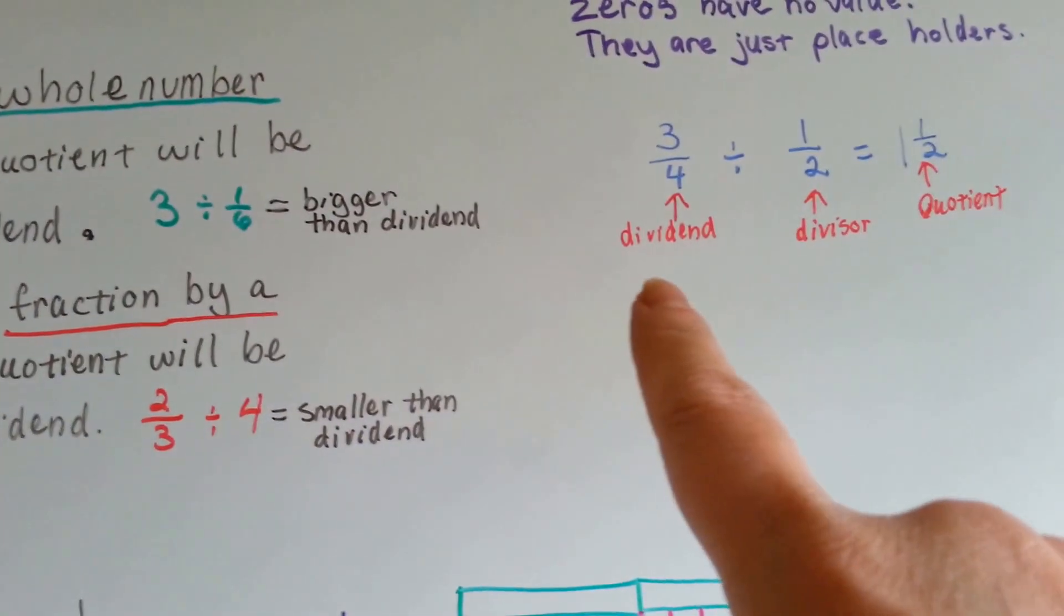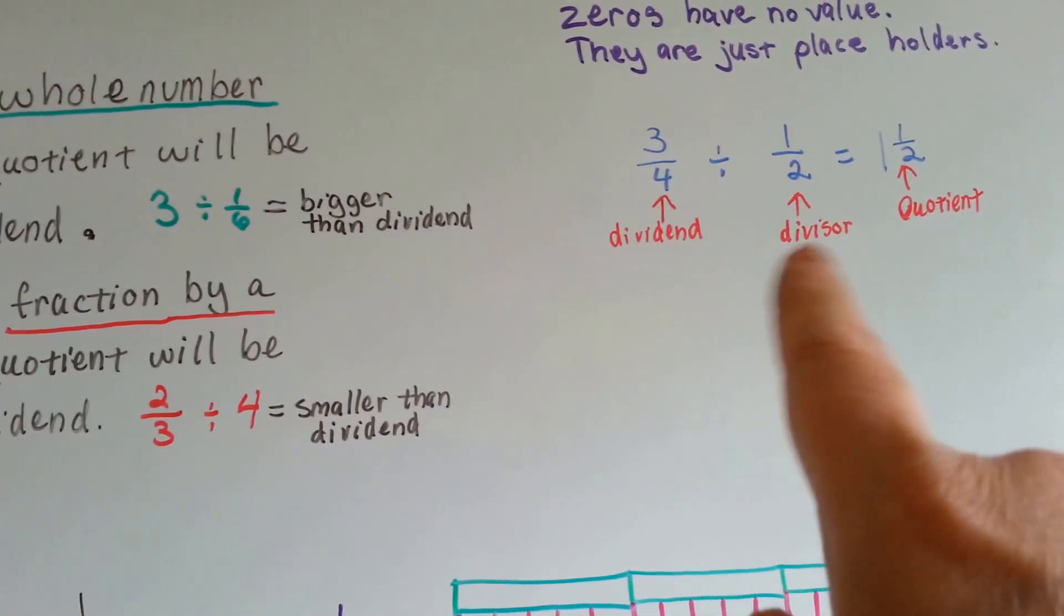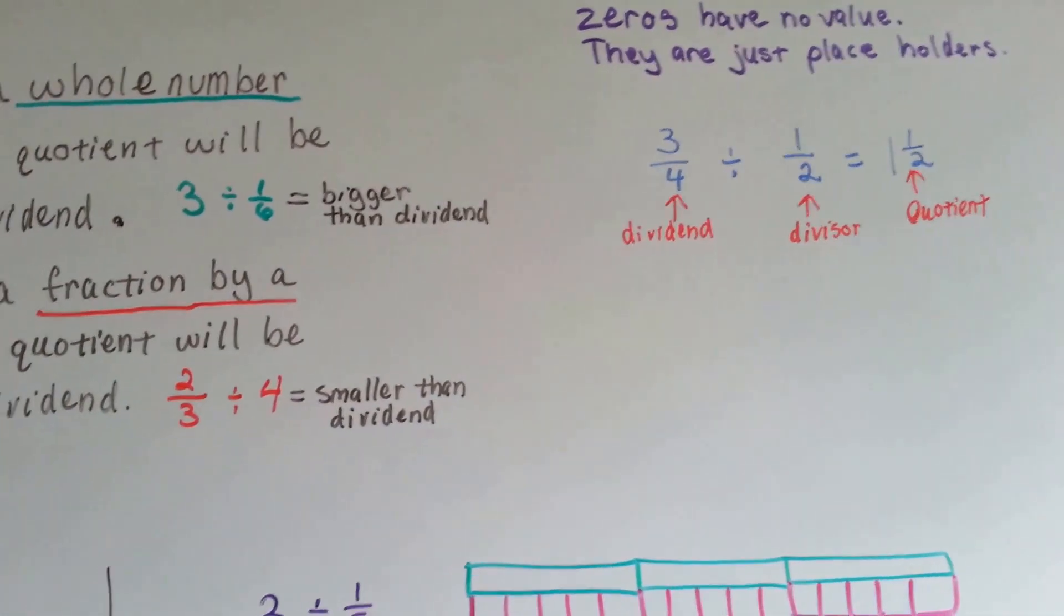So remember, the first number is the dividend, the one you're dividing it by is the divisor, and the answer is the quotient.